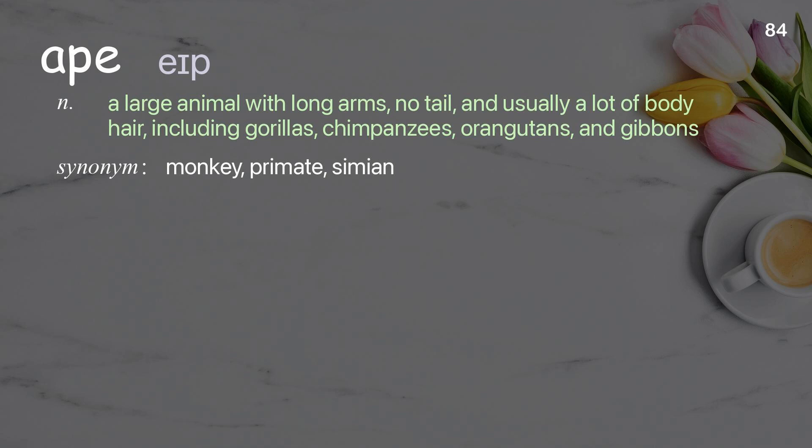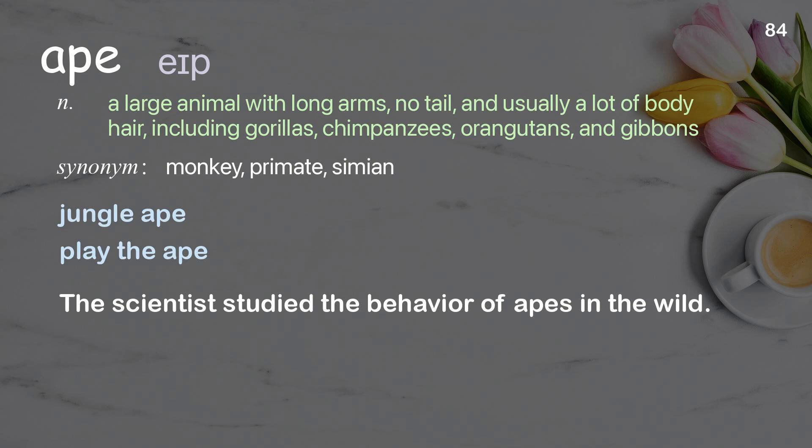Ape: a large animal with long arms, no tail and usually a lot of body hair, including gorillas, chimpanzees, orangutans and gibbons. Examples: jungle ape, play the ape. The scientist studied the behavior of apes in the wild.